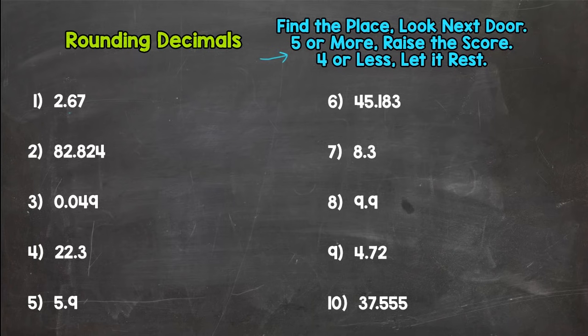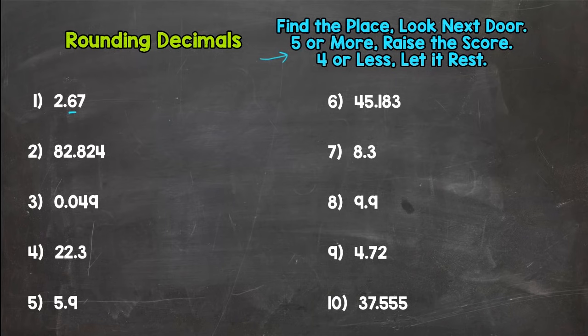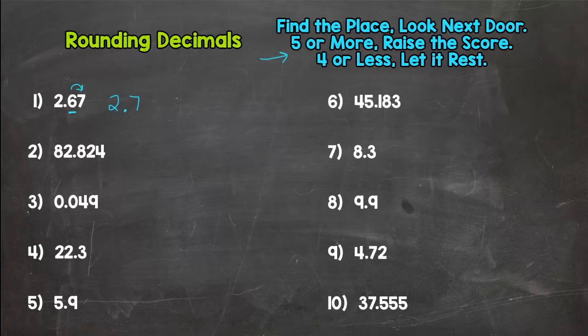For number one, we're going to round to the underlined place — the tenths place. We have a six in the tenths place. We need to see if 2.67 rounds up to two and seven tenths, or stays at two and six tenths. Let's look next door at the seven, and that seven tells us this number is closer to two and seven tenths — so we round up to two and seven tenths.